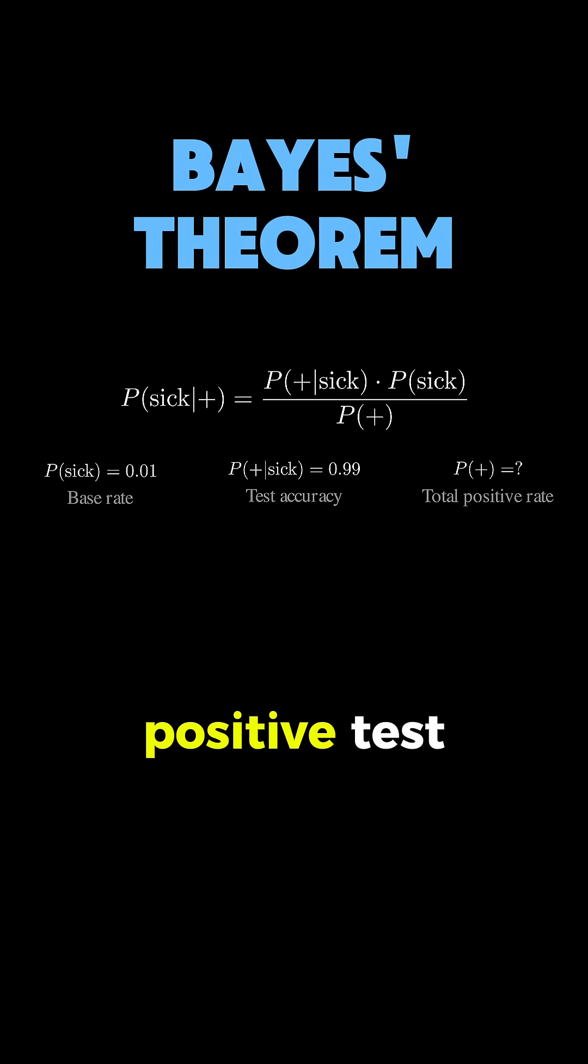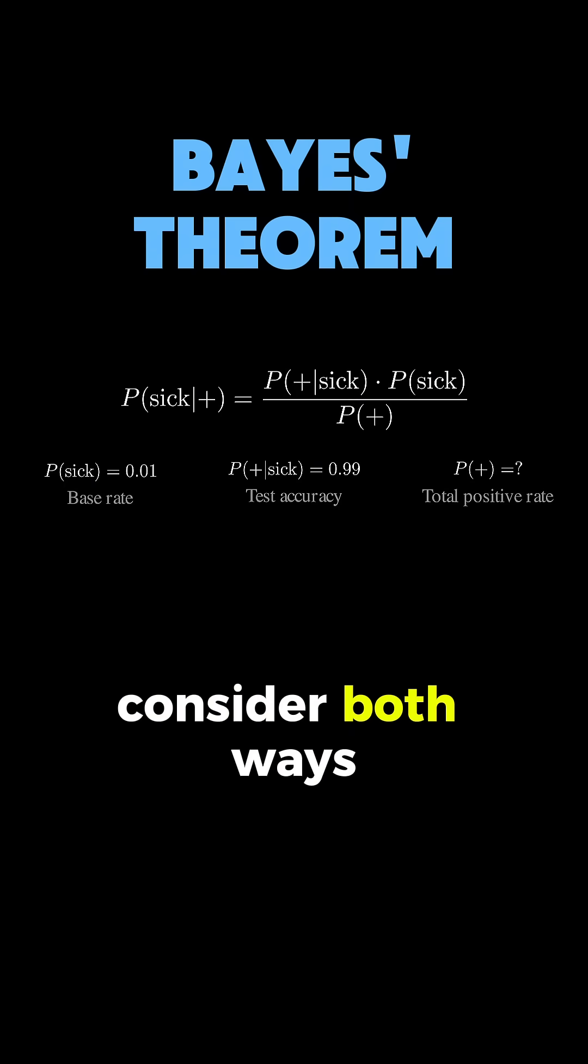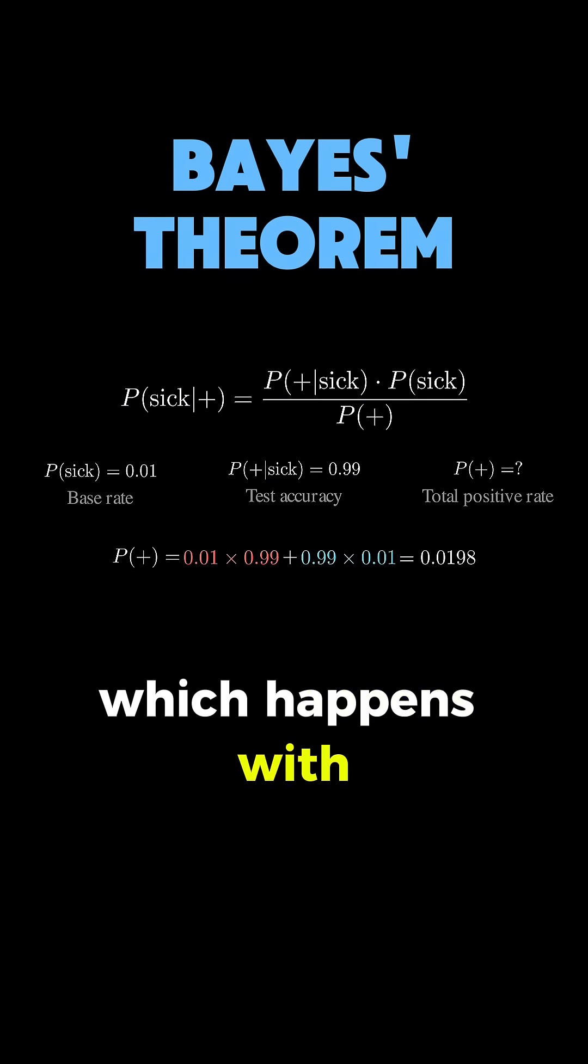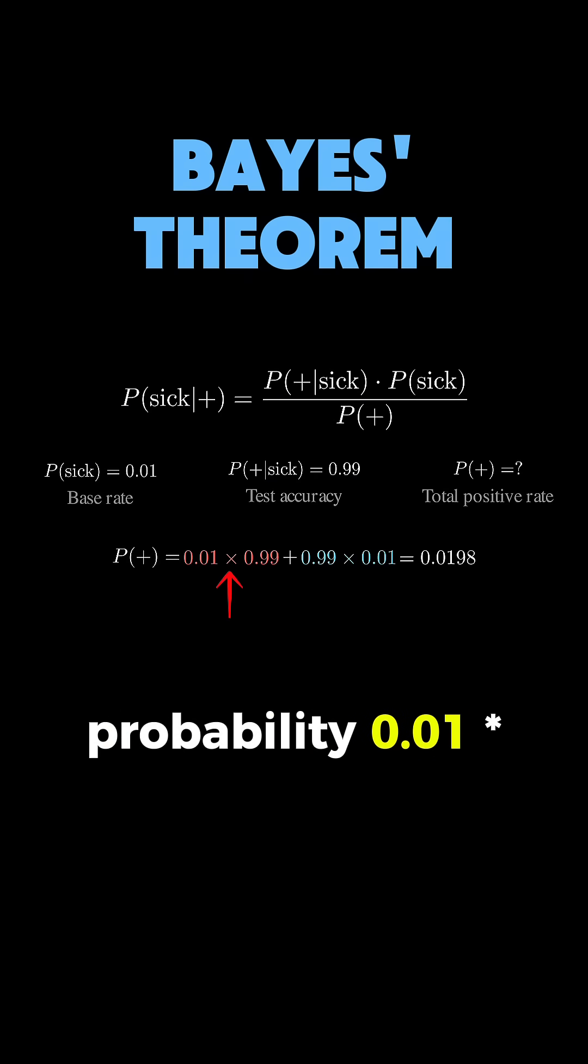To find the probability of a positive test, we need to consider both ways someone can test positive. You could be sick and test positive, which happens with probability 0.01 times 0.99, giving us 0.0099.